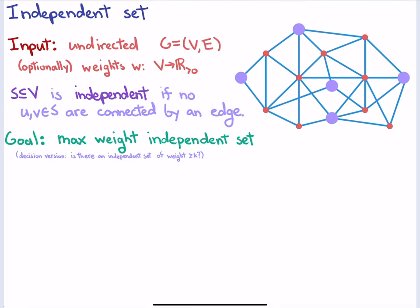The main problem we'll focus on today is called independent set — or maximum weight independent set. You can also look at the unweighted problem. The input is just an undirected graph. In the simplest case, all the vertices have weight one, but maybe some weigh more than others.